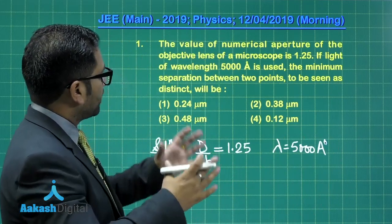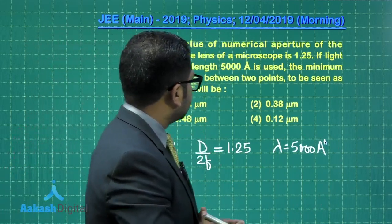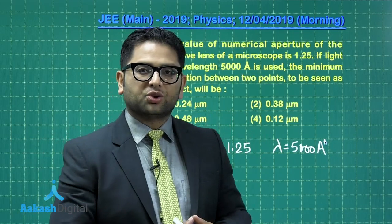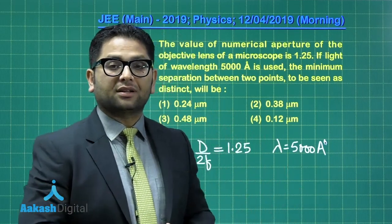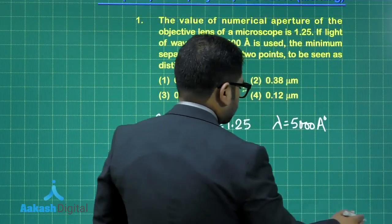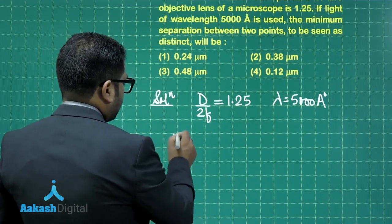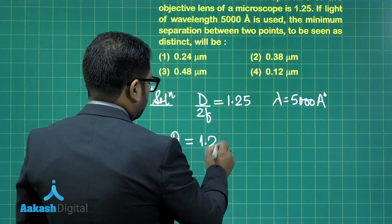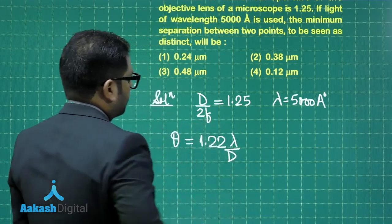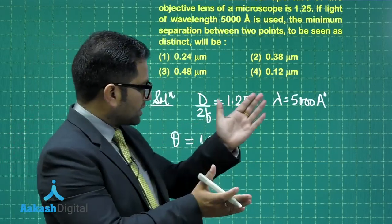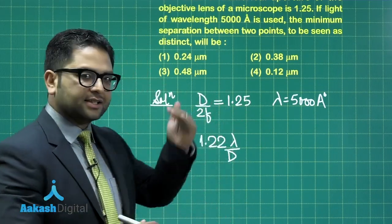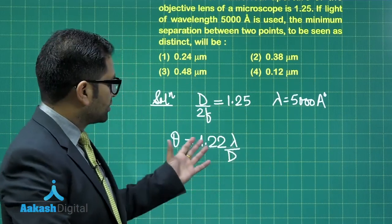Now the question says, the minimum separation between two points to be seen as distinct will be required. So something related to resolution and has a direct connection with the Rayleigh criteria. The minimum angular separation that we would be requiring, if I denote it by theta, that's going to be 1.22 lambda divided by D. So that is the minimum angular separation between the two images. That's a straightforward question, because we consider the circular one.